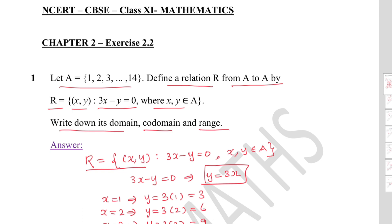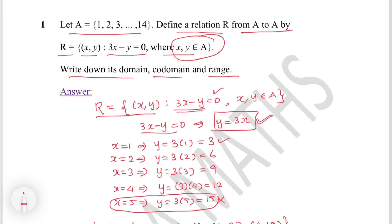R is the set of ordered pairs (x, y) such that 3x - y = 0, which implies y = 3x. Since x and y both belong to A, let us take the elements of A one by one and find the image of x under this relation. When x = 1, y = 3×1 = 3.